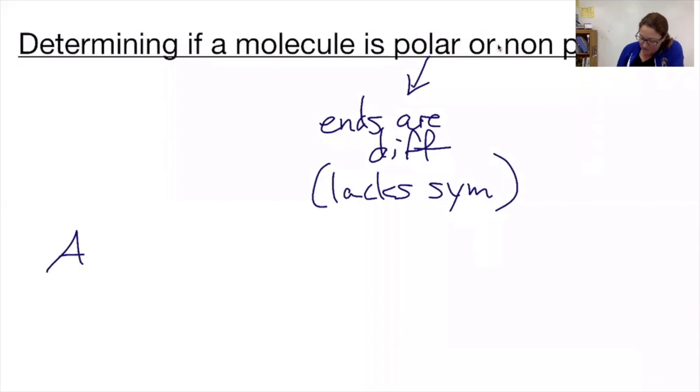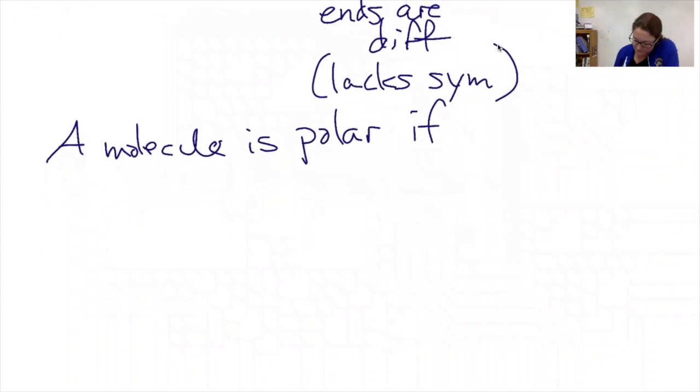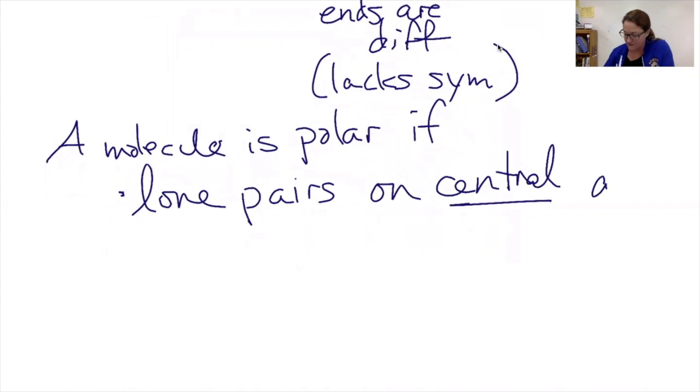Here's how we're going to do it. A molecule is polar if either one of these things is true. It is polar if there are lone pairs on the central atom, not a peripheral atom, but the central atom.